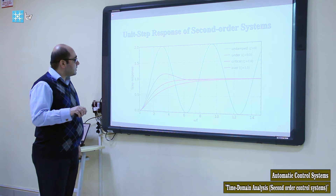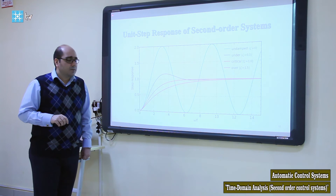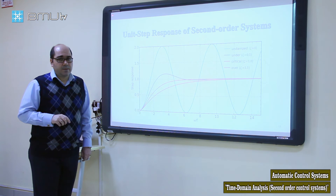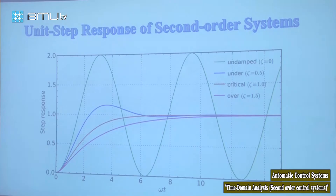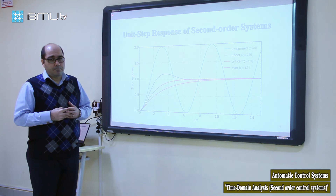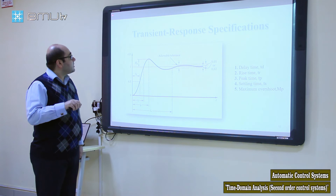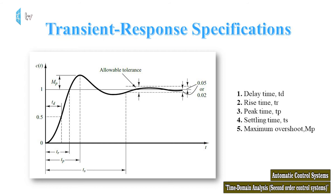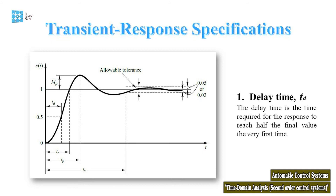For the unit step response of the second-order system, the transient time is very important for analyzing and studying control systems. The transient response has specific performance specifications. The first one is delay time, and the others are rise time, peak time, settling time, and maximum overshoot.